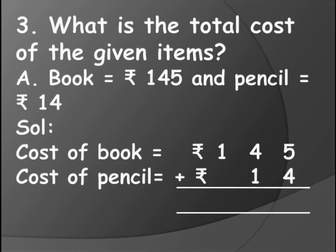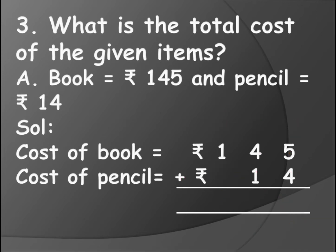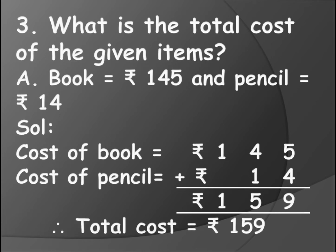Now we start from the 1s. This is 1s, this is 10s, and this is 100s — always start from the 1s. So 5 plus 4 will be 9. Then 4 plus 1 will be 5. And for the 100s, there is only 1 here so you write 1 as it is. So the answer is 159 rupees. Cost of book and pencil together is 159 rupees, so total cost is equal to 159 rupees.